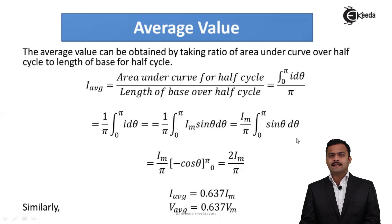Sin θ integral is minus cos θ, and if I apply the limits I will get value 2Im by π. 2 by π is a constant and if we solve you will get that constant number 0.637.